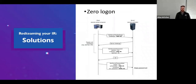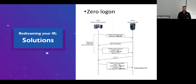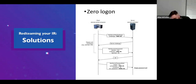ZeroLogon — we had an issue where this exploit was used and the attacker left the password as zeros. We went ahead and fired the exploit again and actually took back the domain controller. ZeroLogon, which I believe was in 2020, is an exploit that changes the password on all your DCs to zeros, and this actually let us reclaim the DC.